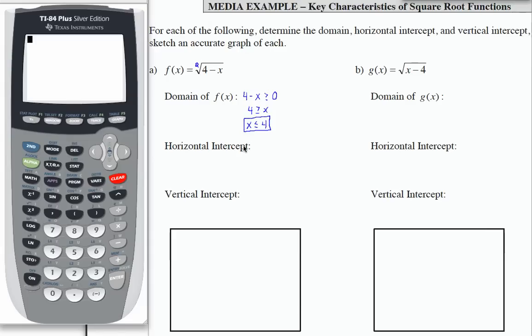If I want to find the horizontal intercept, then I want to take and set what's underneath the radical to zero. Because I want to know what value of input is going to give me an output of zero. That's the location of the horizontal intercept. Because it's on the horizontal axis, the output is zero. So when I'm working with the square root, if what's under the radical is zero, the square root of zero is still zero. So I can just focus on this part and set this part to zero. So if four minus x equals zero, then four equals x. That means my horizontal intercept is four comma zero.